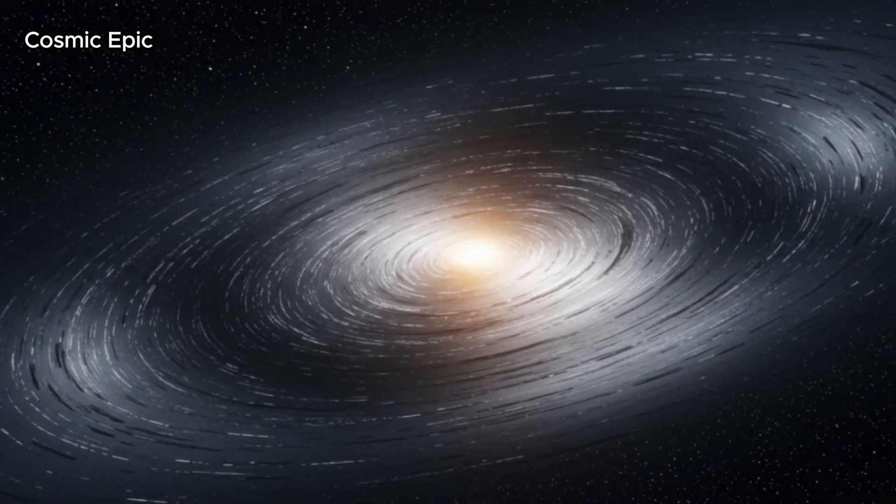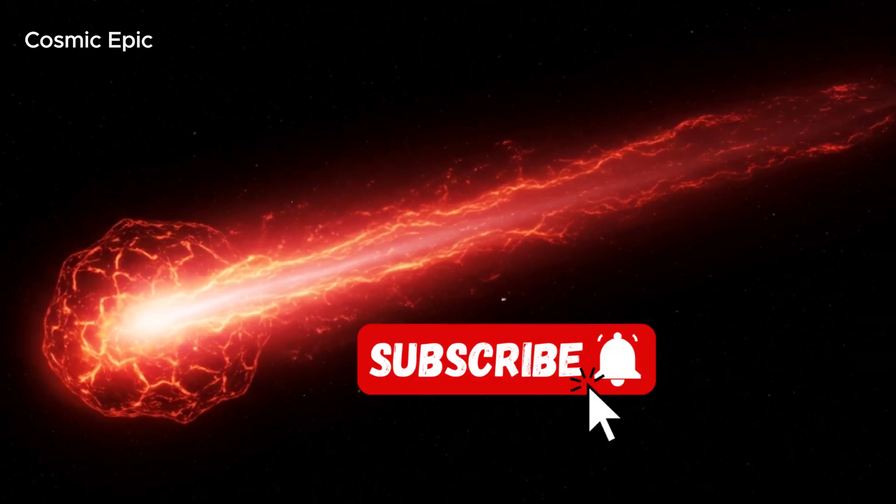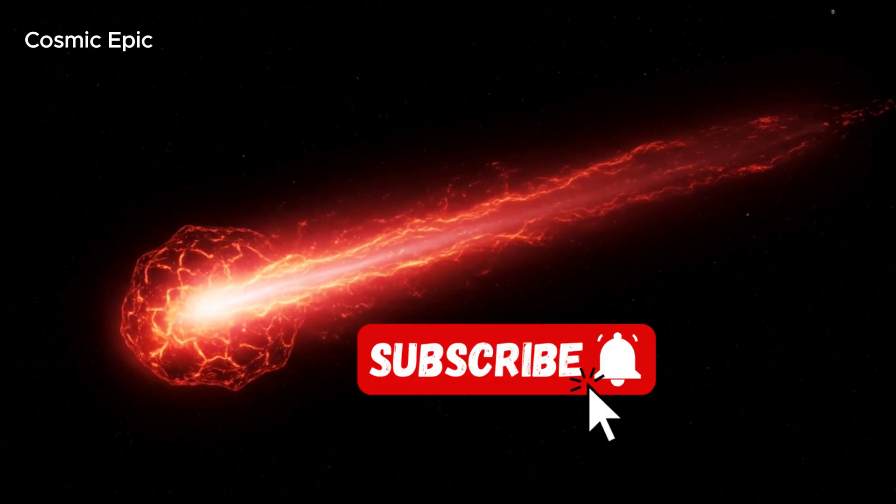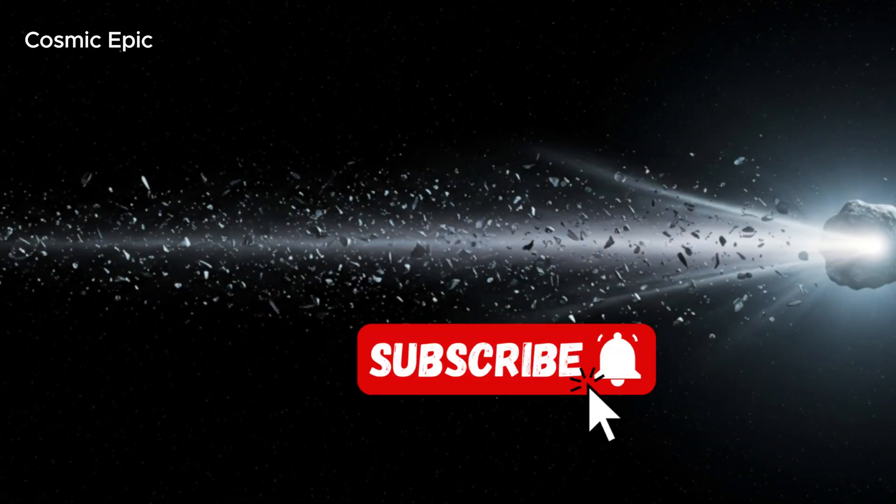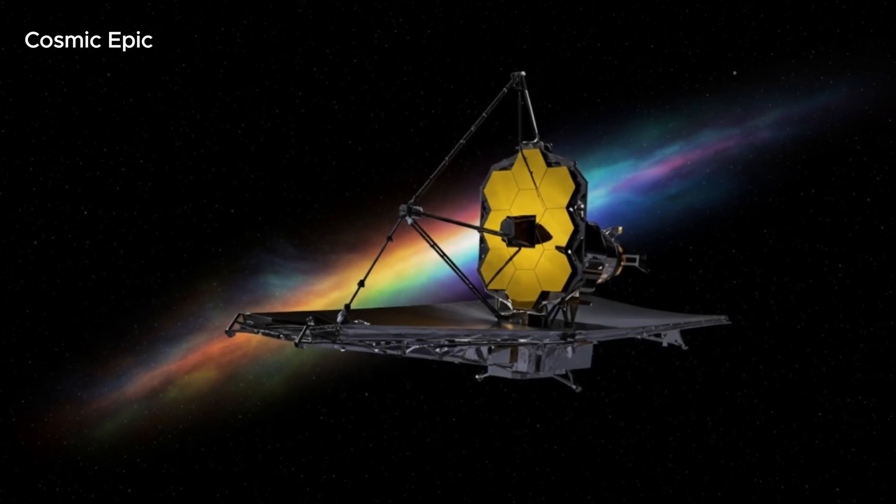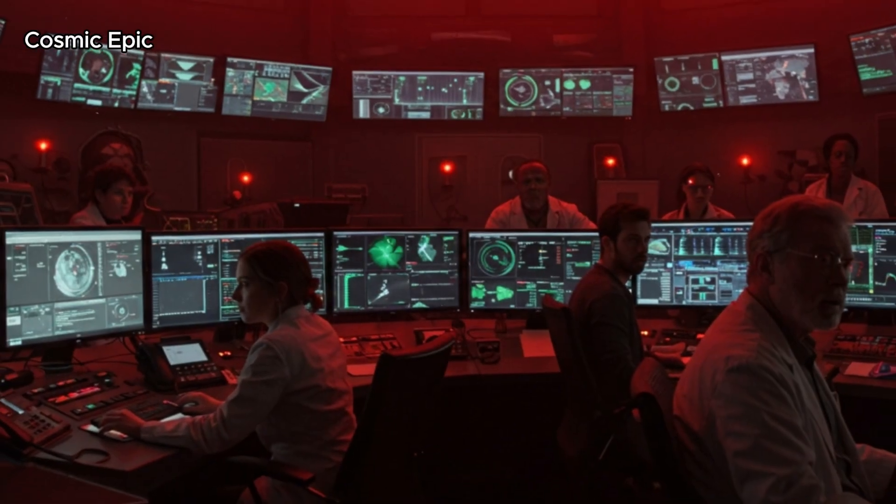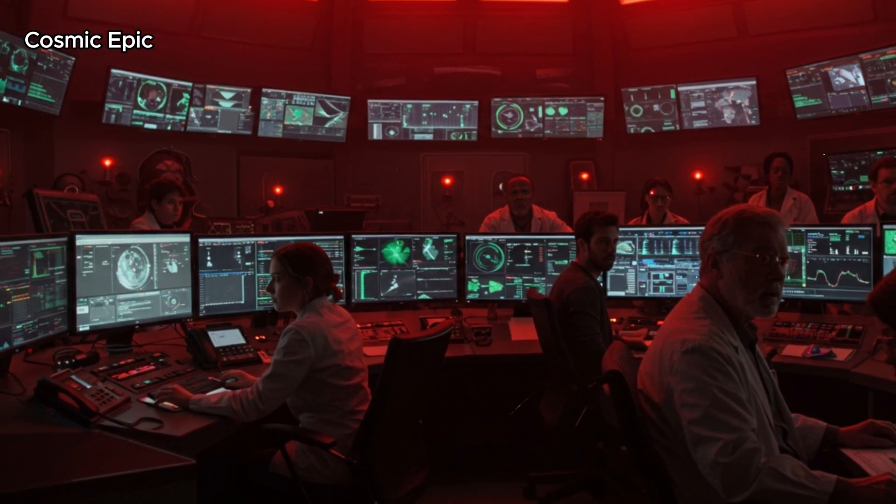Back in 2017, a strange object named Oumuamua flew past Earth. It was rocky, fast, and mysterious. Then in 2019 came Borisov, icy, active, and even faster. Two visitors from deep space, both unexplained.